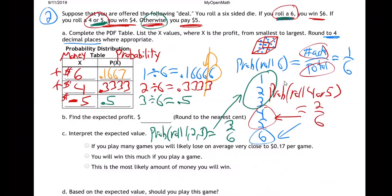Question: that six that you're dividing — is that the six on the die or the six for the cost? No, it's the six on the die. Probability always has the total number of things that can happen. So when you roll the die, there's six different things that can happen. It's just a pure coincidence that the win amount is also six. Good question — it's just the six different things that can happen when you roll the die.